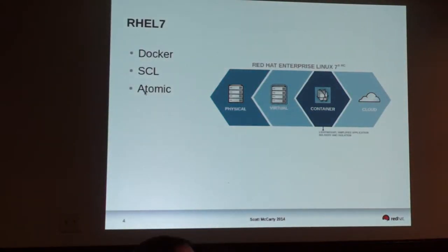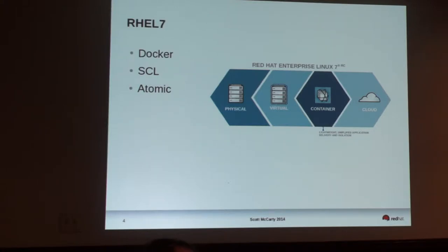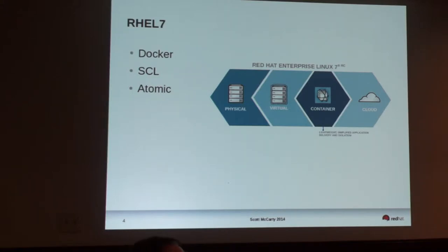Another thing I didn't talk about was RHEL Atomic. So RHEL Atomic, Software Collections, and Docker are all what Gartner's calling 'paste layer development.' You can imagine Facebook and Google release every single day - my buddy said it's like 40,000 releases a day. With all their different products, that's how many commits there are per day.